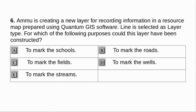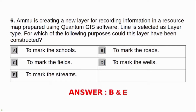Ammo is creating a new layer for recording information in a resource map prepared using Quantum GIS software. Line is selected as layer type. For which of the following purposes could this layer have been constructed? A. To mark the schools. B. To mark the roads. C. To mark the fields. D. To mark the wells. E. To mark the streams. Answer: B and E.